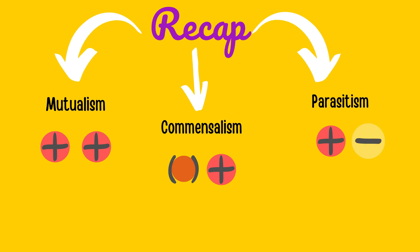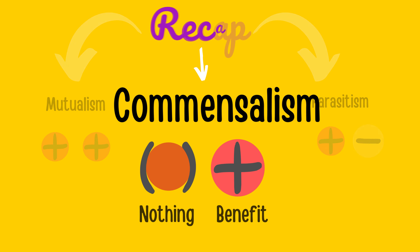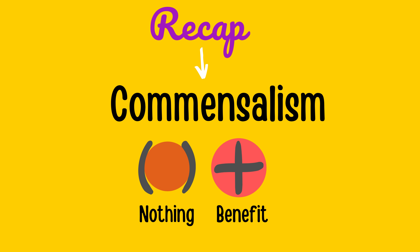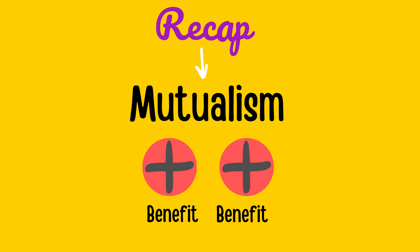Last but not least, let's do some recap on what we have learned from this video. We have three types of symbiosis: commensalism, mutualism, and parasitism. For commensalism, remember the nothing and plus symbol. For mutualism, we have plus and plus. And finally, don't forget the plus and minus symbol for parasitism.